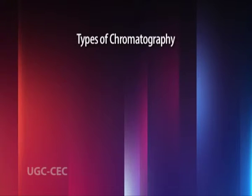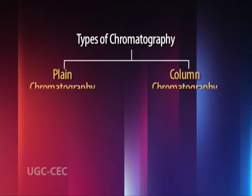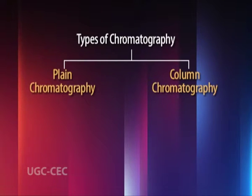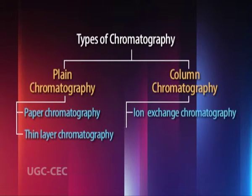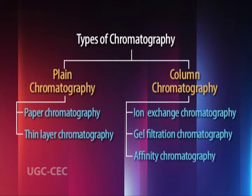The main types of chromatography are planar chromatography and column chromatography. Examples of planar chromatography are paper chromatography and thin layer chromatography, while examples of column chromatography are ion exchange chromatography, gel filtration chromatography, and affinity chromatography.